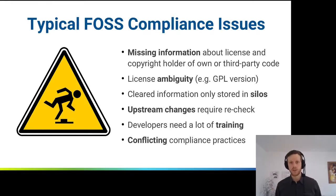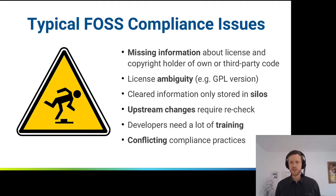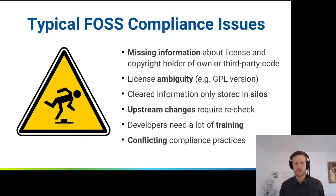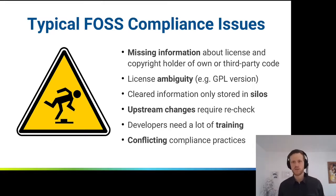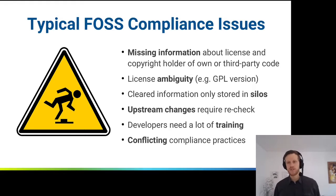Then, for instance in the Linux kernel project, but many more as well, there's the issue of license ambiguity. If you have a source code file with a license header notifier, it's often unclear which GPL version is meant. And even if companies, communities, or individuals find out or clarify this information, it is often only stored in private databases — in silos which are not shared among each other.